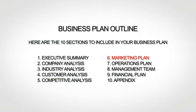The sixth section is your marketing plan, where you lay out your marketing strategy. The seventh section is your operations plan, where you explain how you actually run or will run your business. The next section, the management team, is where you provide bios of your team. The ninth section is your financial plan, where you give financial forecasts. And finally, the tenth and last section is your appendix, where you provide any additional supporting information.